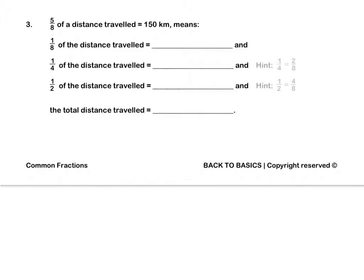Question 3. Five eighths of a distance travelled is 150 kilometres. This means that 1 eighth of the distance travelled will be 150 kilometres divided by 5, which is 30 kilometres. Remember that 1 quarter is equal to 2 eighths, so 2 eighths of the distance will be 60 kilometres.